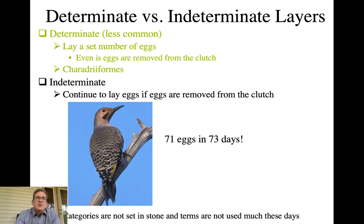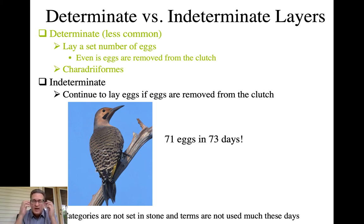In contrast, something like the northern flicker is an indeterminate layer, which is what most birds are. If a predator takes one of the eggs — partial nest predation — they will replace it until they reach the clutch size appropriate for that species. This can be pretty extreme: in one study where they continually removed one egg from a northern flicker nest, one female was able to lay 71 eggs in 73 days before she stopped trying to complete that artificially reduced clutch.